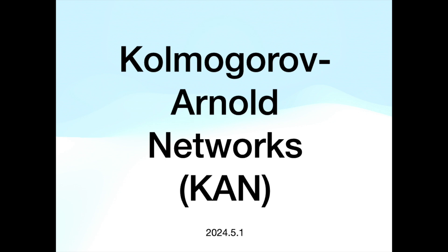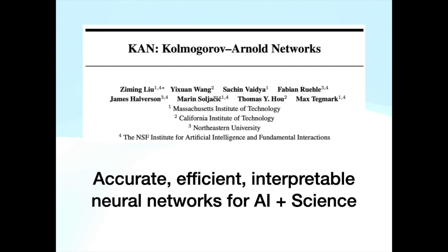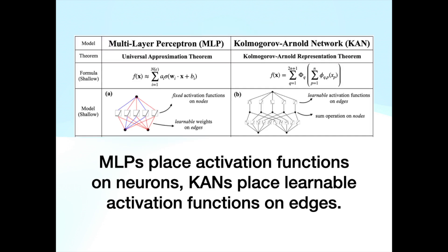Kolmogorov Arnold Networks, KANs. They are proposed as promising neural networks for AI plus Science. MLPs place activation functions on neurons, while KANs place learnable activation functions on edges.